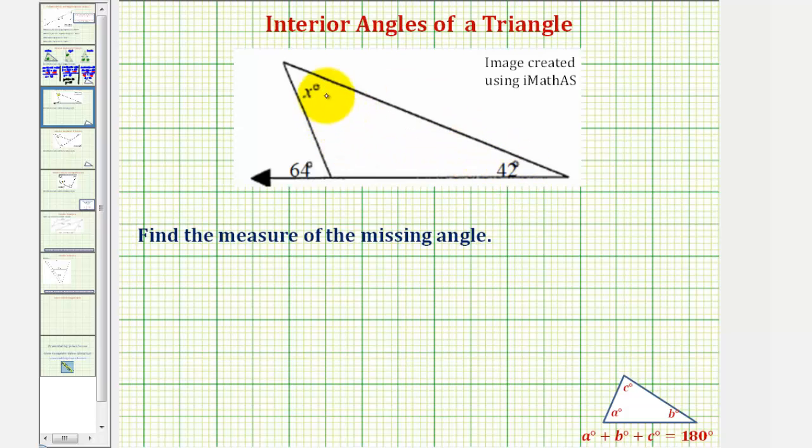But in our diagram, we're missing two of the interior angles and given this exterior angle. But we can use the measure of this exterior angle to find the measure of this interior angle and then use the fact that the sum of the interior angles is 180 degrees.